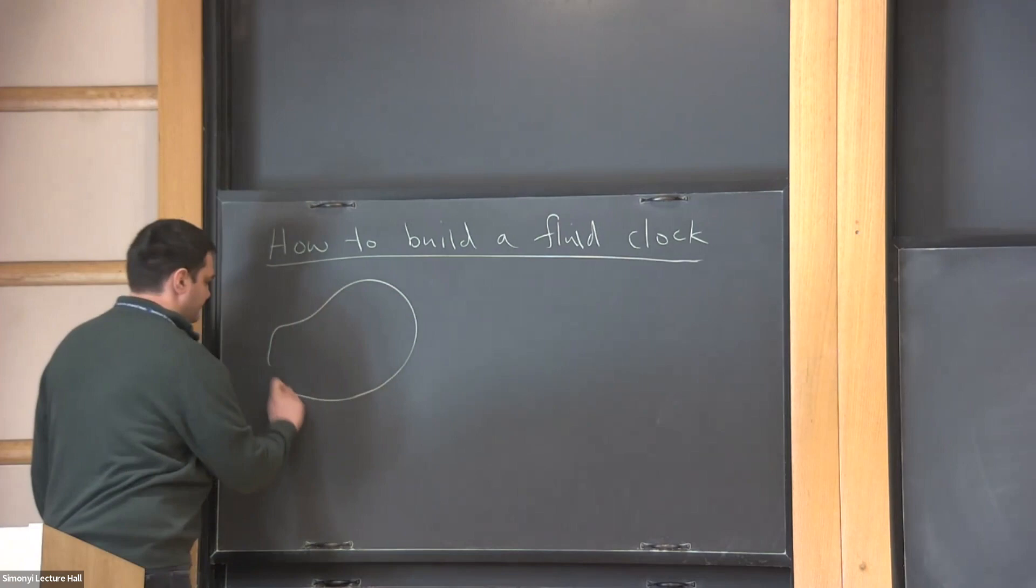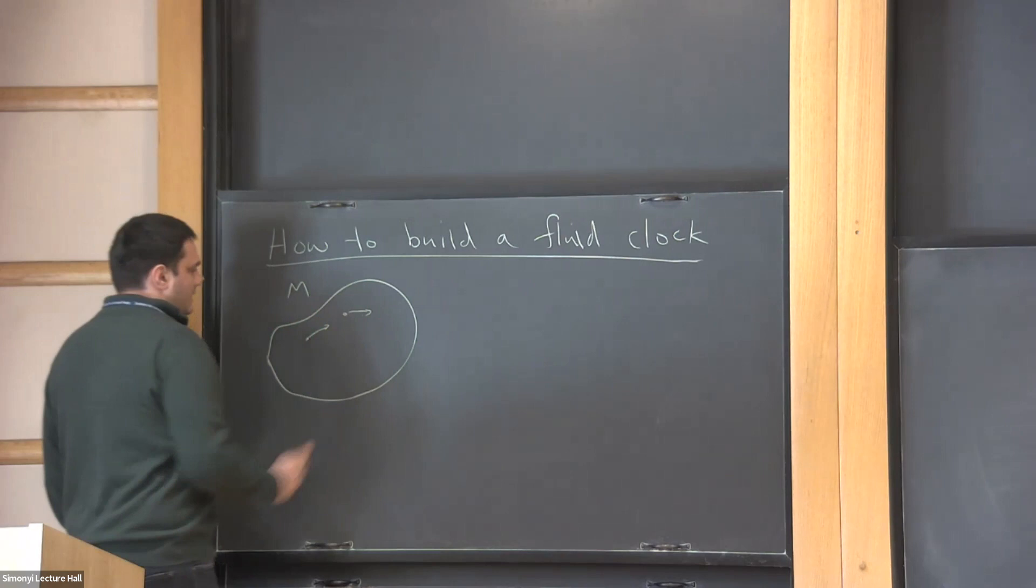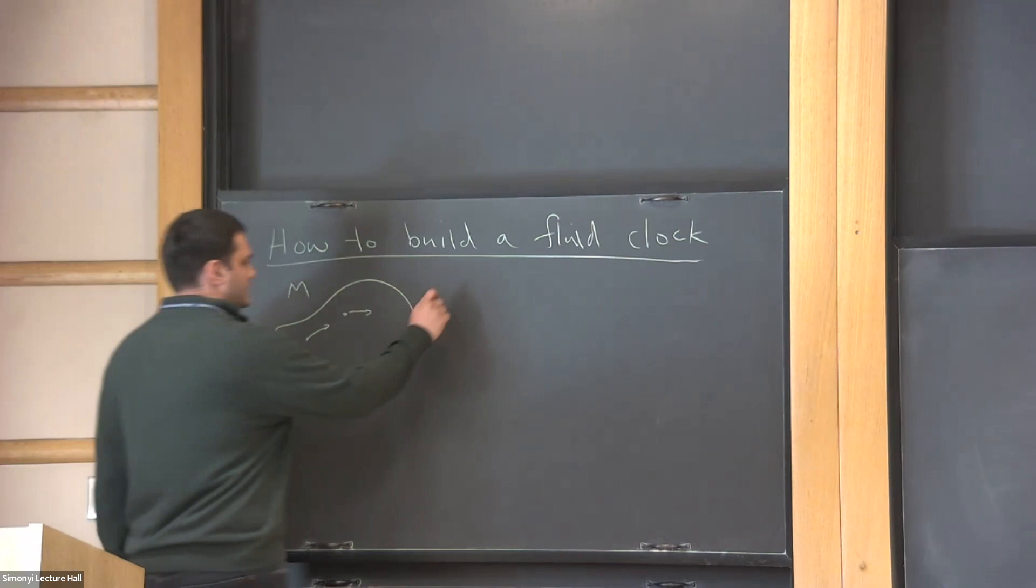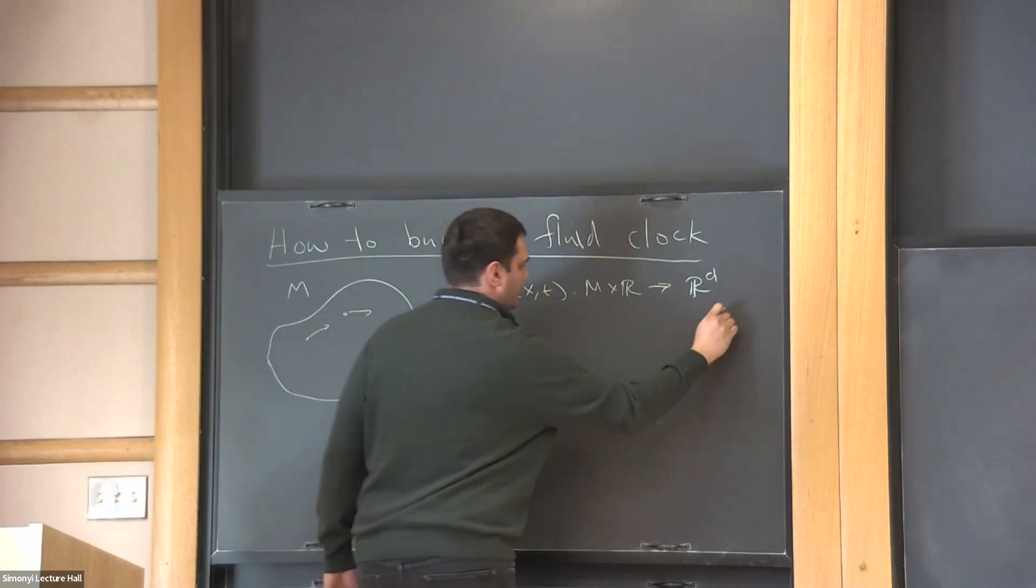Let's consider a bounded domain in the plane M, say it's simply connected to fix ideas. Inside this container, this fluid vessel, there's a homogeneous incompressible medium fluid, which is described by a velocity vector field. For most of the talk, I'll just talk about two dimensions.